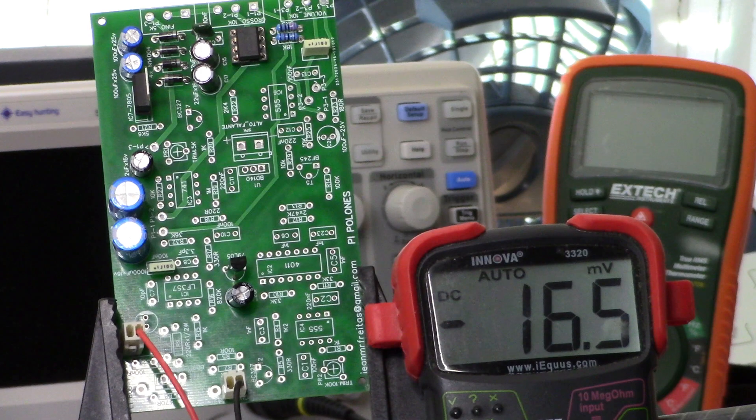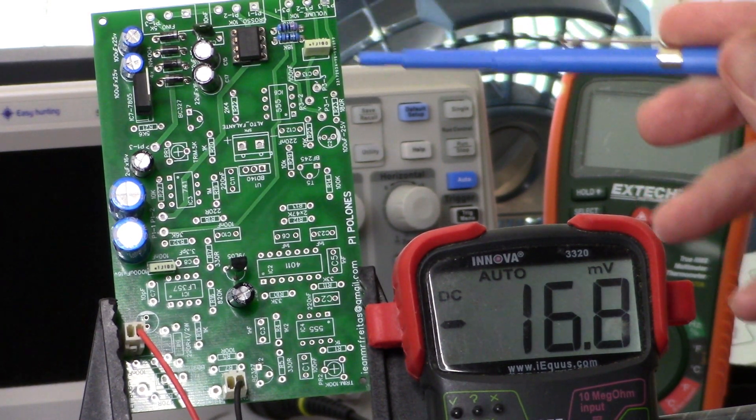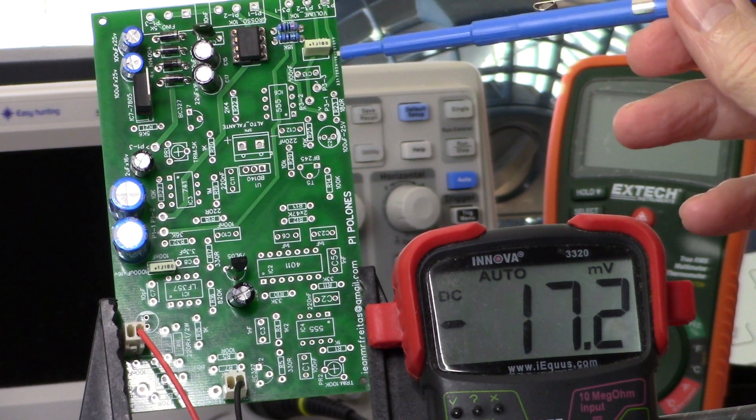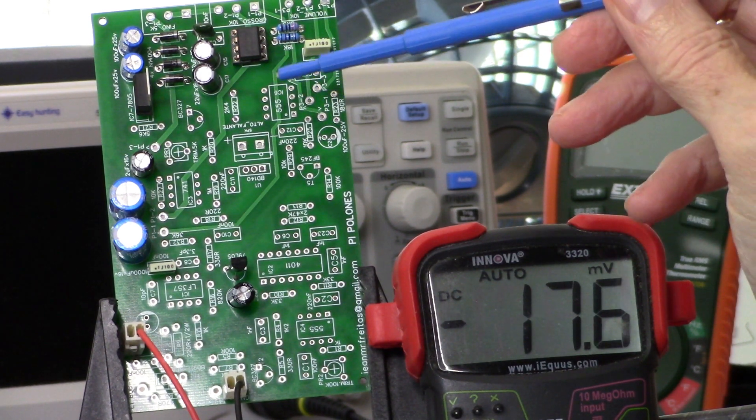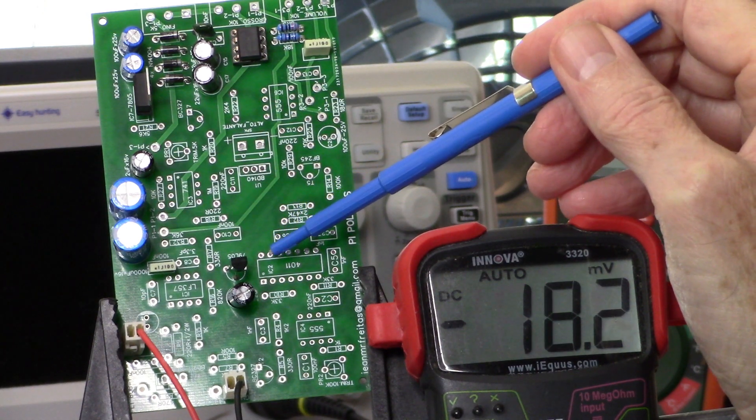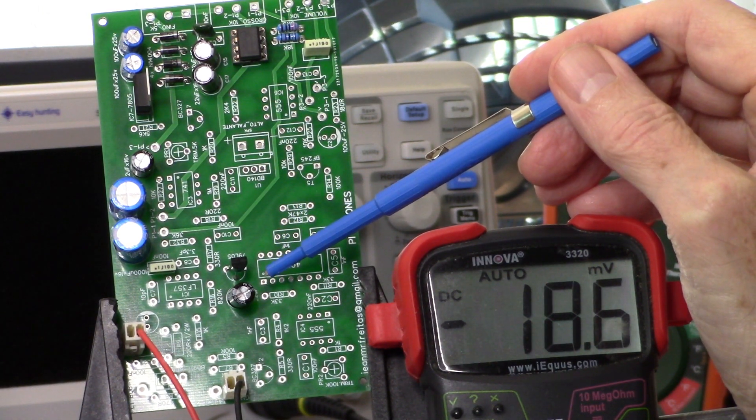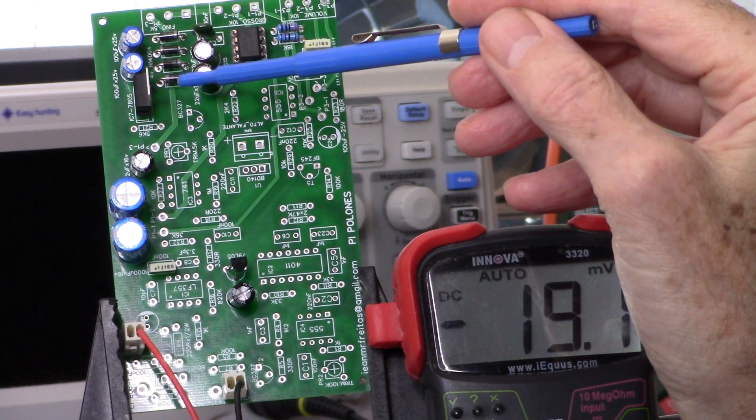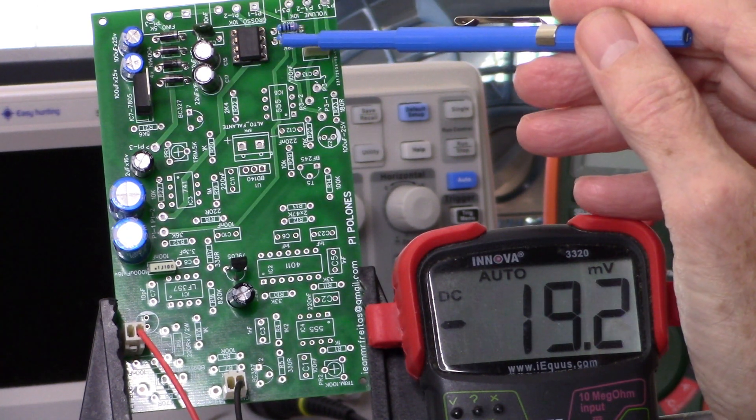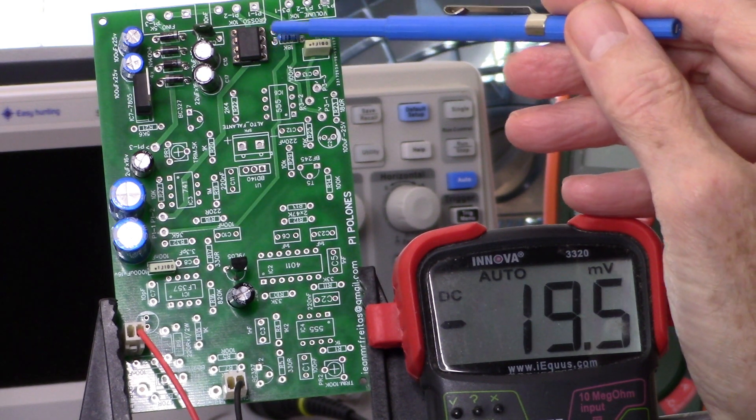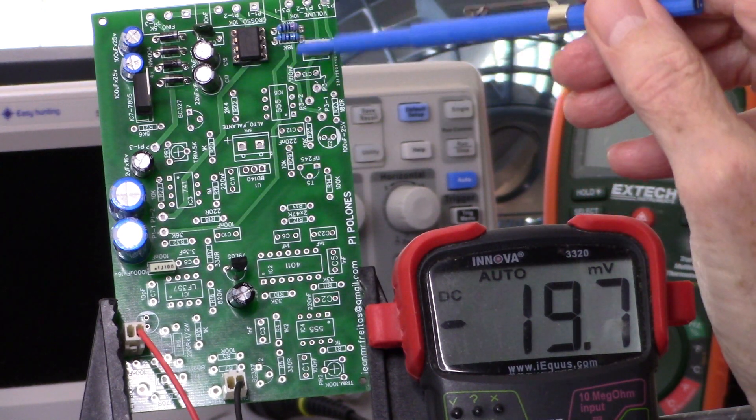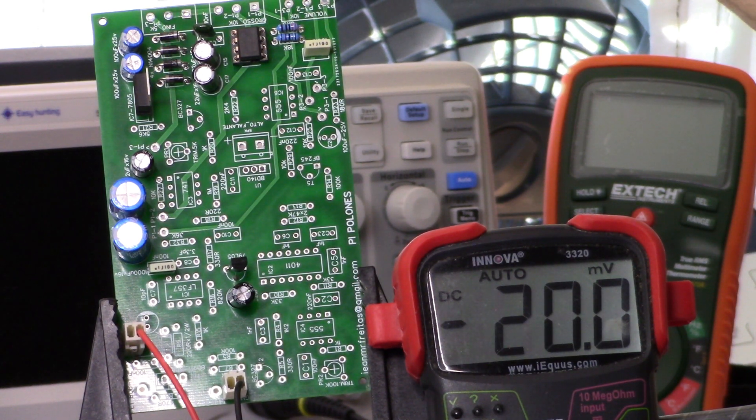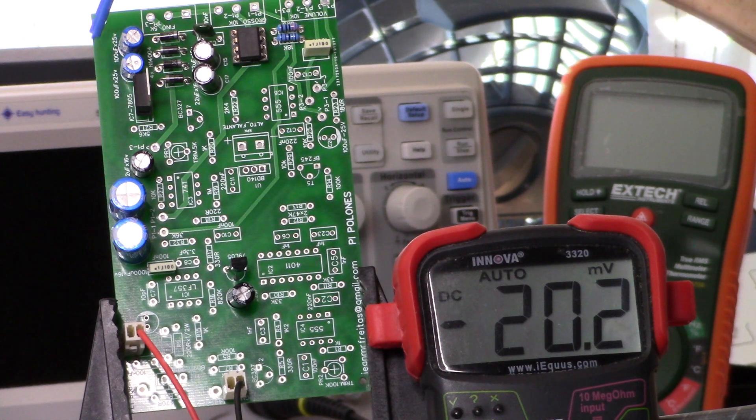All right, back here with the PI Polonês Polish PI. We have the positive 5 volt and negative 5 volt power supplies built. They are anchored by, for the negative, a 79L05 for the negative 5 volts and a 7805 for the positive 5 volts. We've got an NE555 as part of the charge pump circuit, and you can see four diodes here and a couple of resistors, and the rest are all caps.